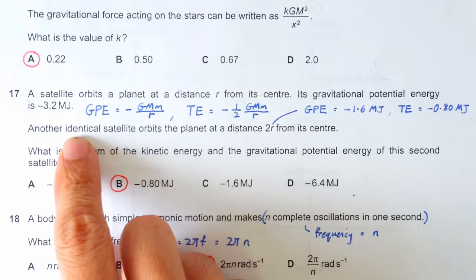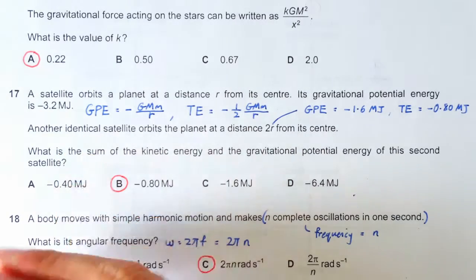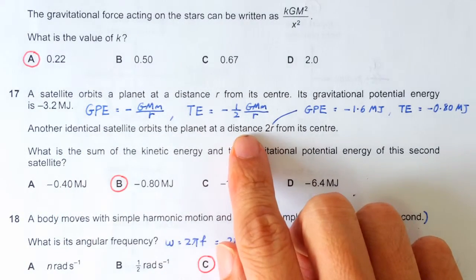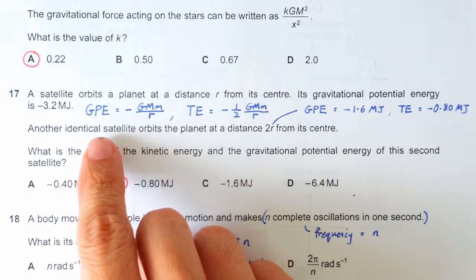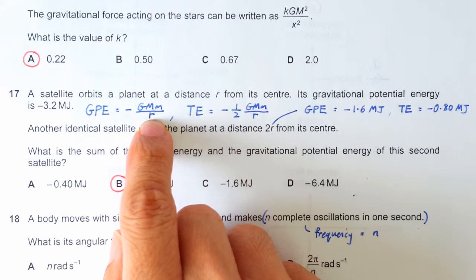So if you have another identical satellite, that means they have the same mass, but orbiting at a further distance, 2R. So you have now doubled the distance, the orbital radius.